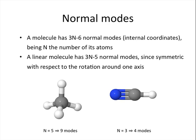Usually, a molecule has 3n-6 normal modes, also called internal coordinates, where n is the number of its atoms.